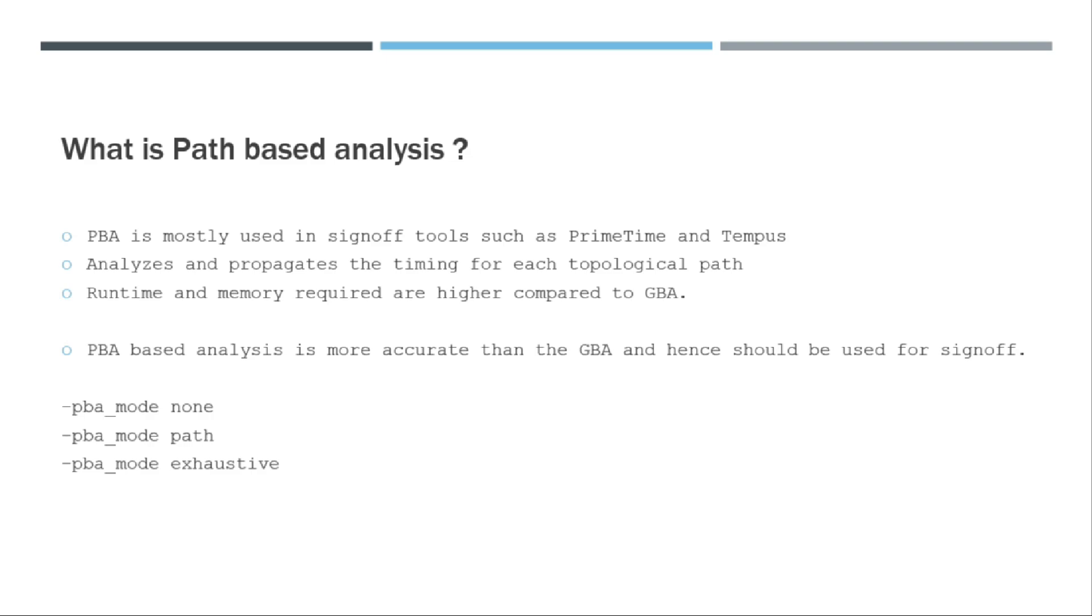But in case of PBA mode exhaustive, this will exhaustively calculate all the paths and what is the worst path. It will calculate based on PBA mode and also report based on PBA mode. So that's the reason why it's called exhaustive. It's a full PBA mode run. So this exhaustive has to be the full signoff check for your timing.